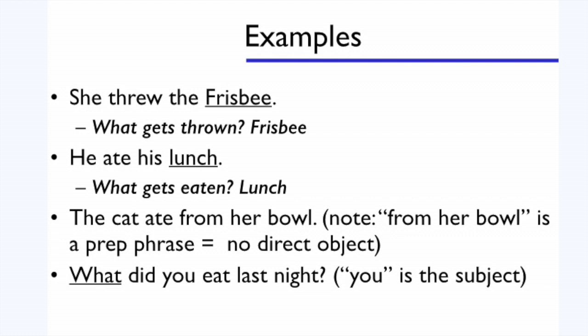Alright, one last example. The cat ate from her bowl. Now, it's really tempting to jump straight to bowl and label that as the direct object. But let's do it the right way. First step, we look for prep phrases. And sure enough, from her bowl is a prep phrase. If we get rid of that, we're left with the cat ate. Well, cat's the subject. Ate's the verb. There's nothing left to be eaten in this sentence. So there's no direct object.